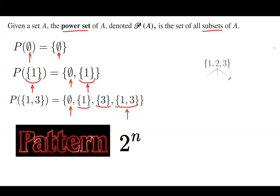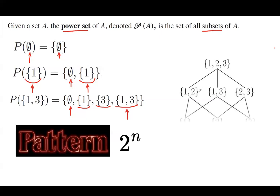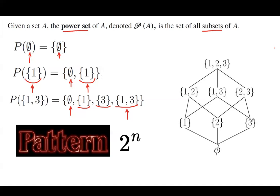Now consider the set including 1, 2, 3. This set has subsets including 1 and 2, including 1 and 3, and including 2 and 3. The set including 1 and 2 has two elements: 1 and 2. The set including 1 and 3 has two elements: 1 and 3. The set including 2 and 3 has two elements: 2 and 3.